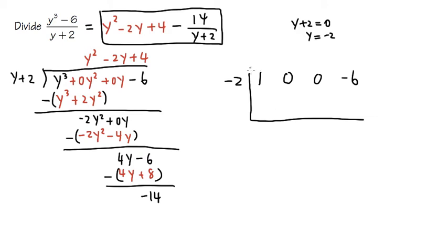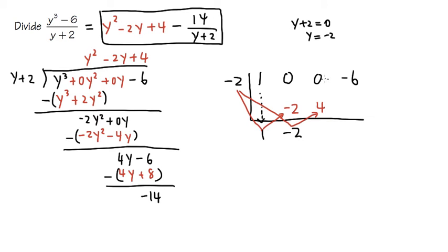First, we bring down the 1. Then we take negative 2, multiply by 1, and put it under the next column: negative 2 times 1 is negative 2. In synthetic division we add these two numbers: 0 combined with negative 2 gives negative 2. We repeat: take this negative 2, multiply by negative 2, and put it under the next column. Negative 2 times negative 2 is positive 4. Then 0 plus 4 is 4. One more step: negative 2 times positive 4 is negative 8, and negative 6 plus negative 8 gives us negative 14.